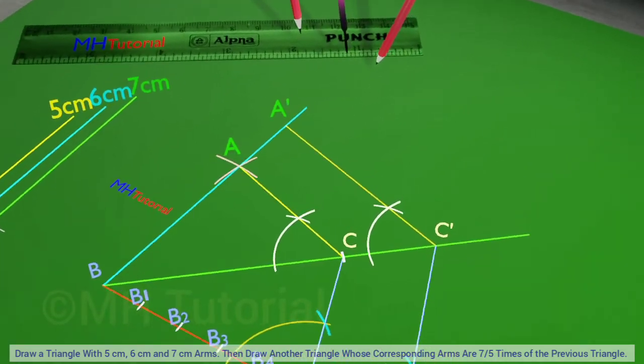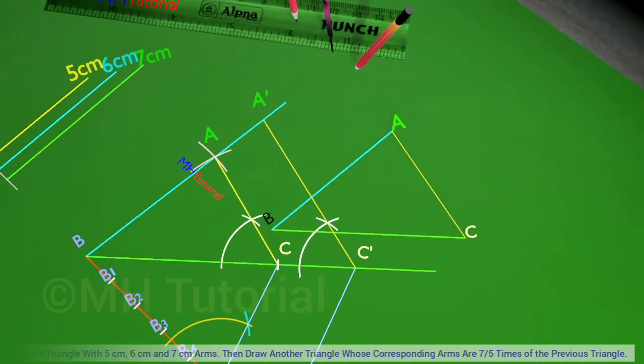The other arm of this angle intersects the extension of the angle arm BA at point A dash. So, the triangle A dash B C dash is a similar triangle to the given triangle ABC.